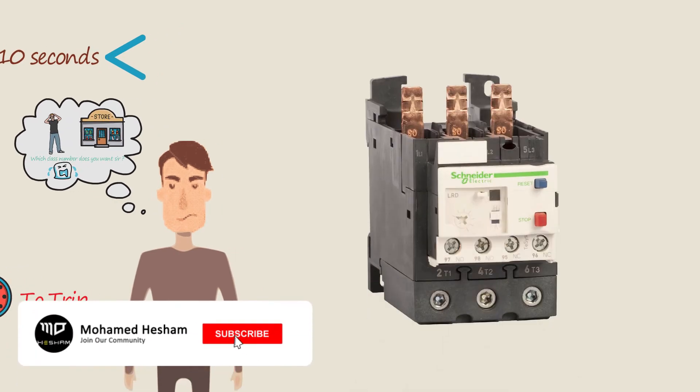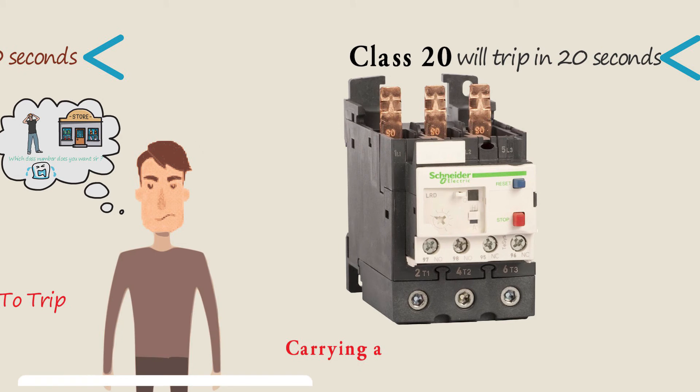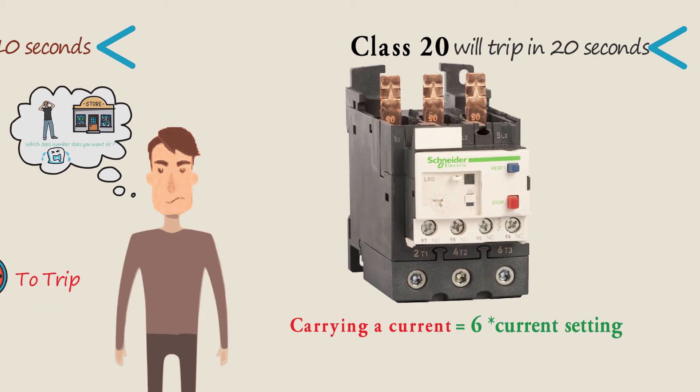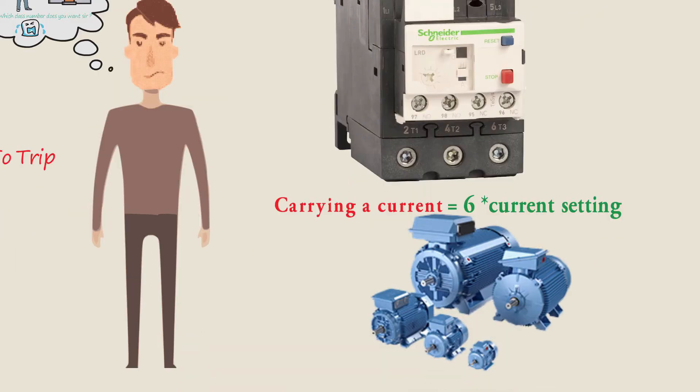A Class 20 relay will trip in 20 seconds or less when carrying a current equal to six times its rating. A Class 20 overload relay would be suitable for applications with high initial loads.